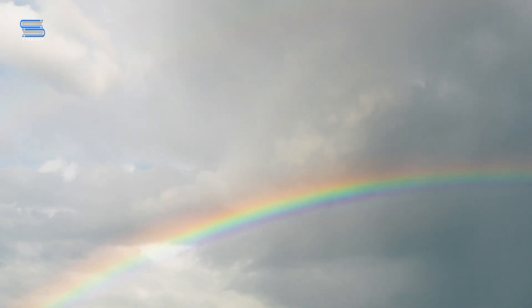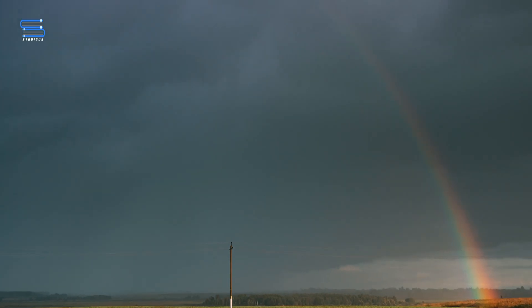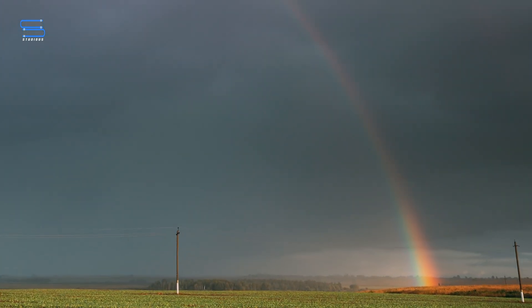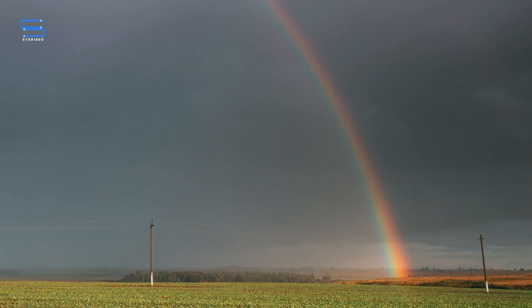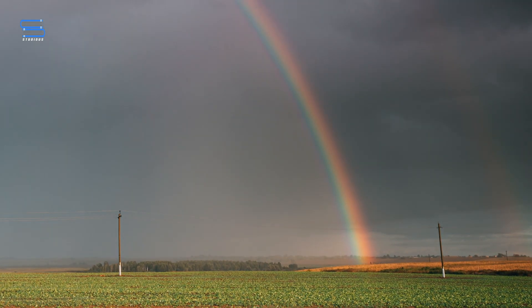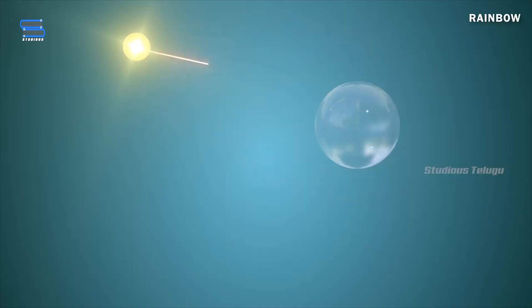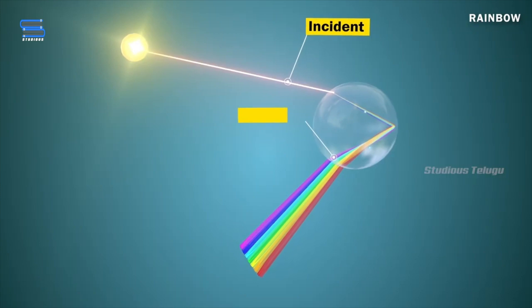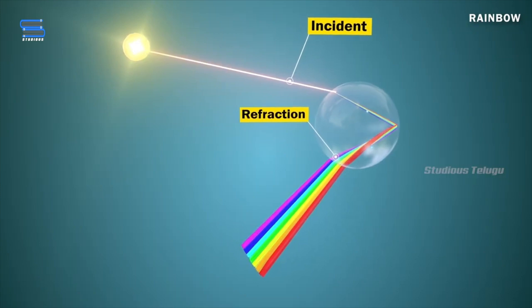Rainbows are a beautiful and fascinating phenomenon. They're a reminder of the power of science, and they're a lot of fun to watch. The angle of the sun and the water droplets determine the angle of refraction, which is the angle at which the sunlight is bent.